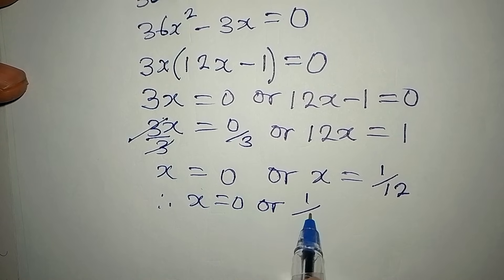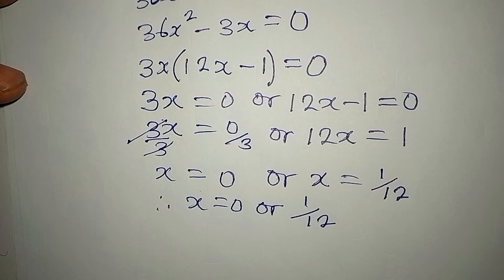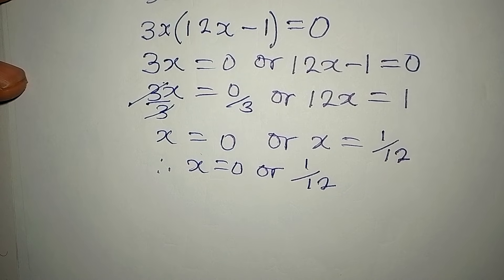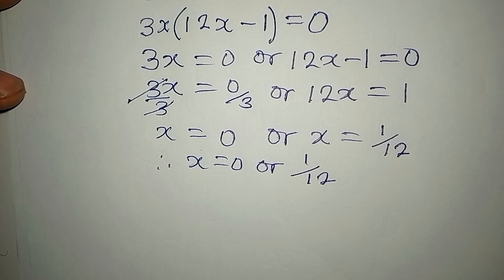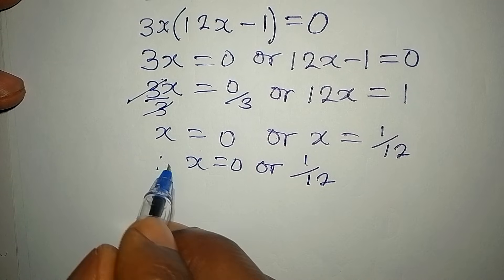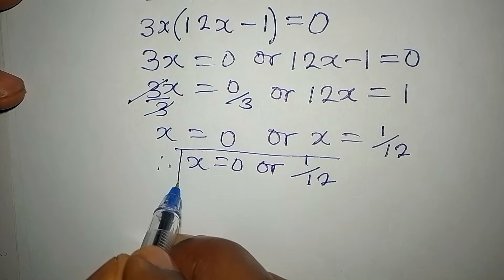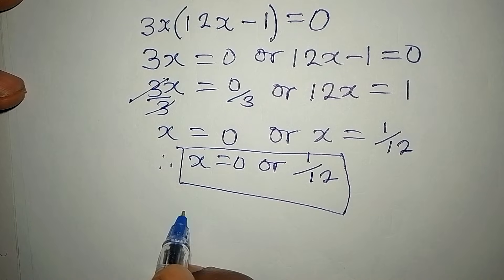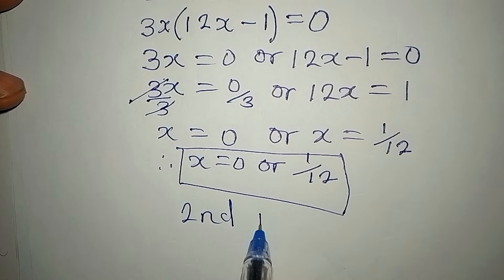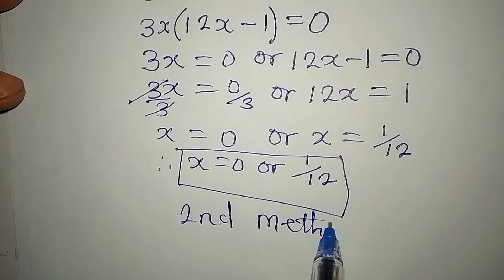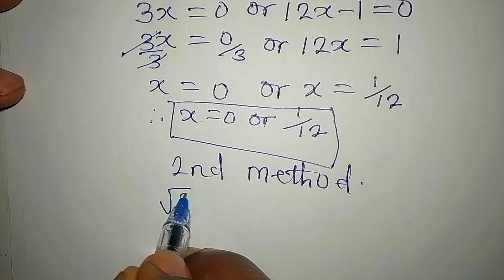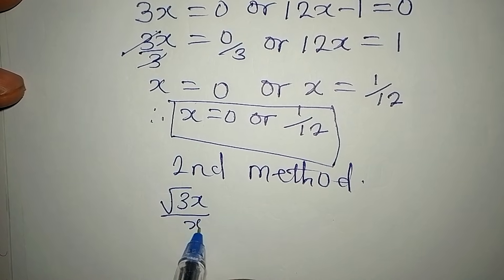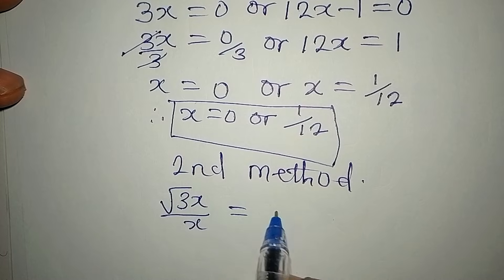I told you I was going to use two methods. Let's apply the second method, which will get the same value for x. We still have square root of 3x over x equal to 6.